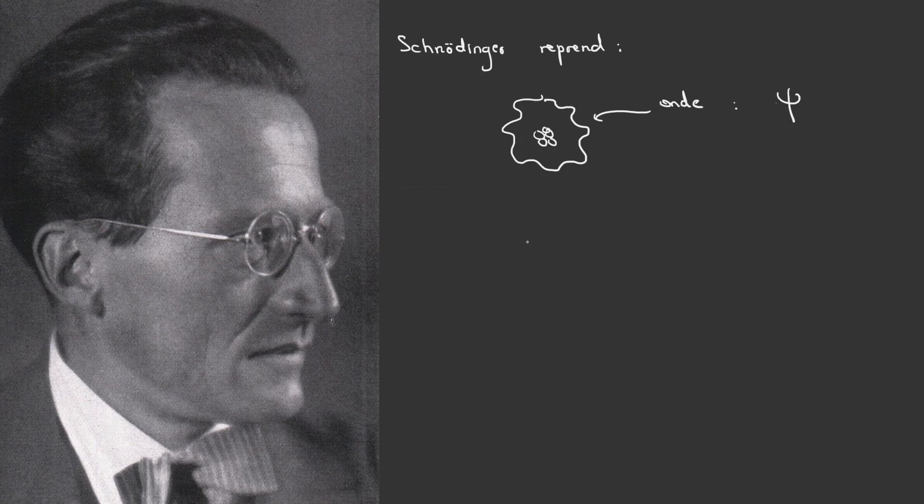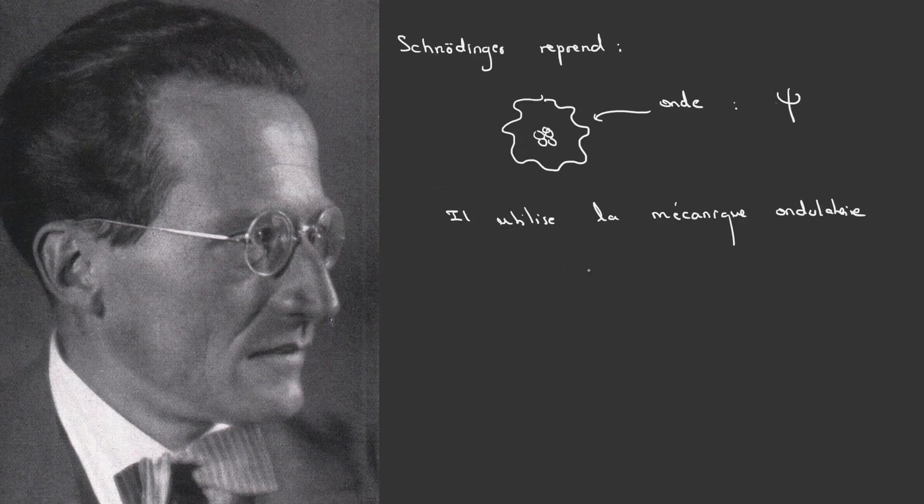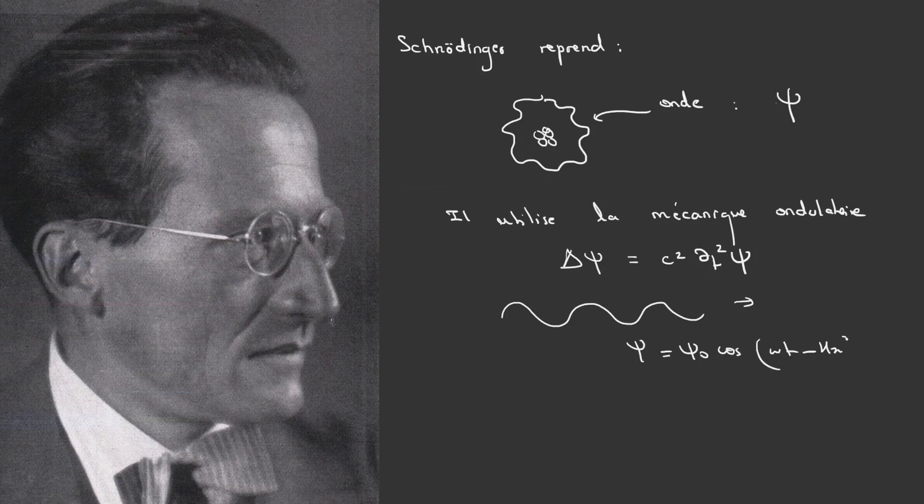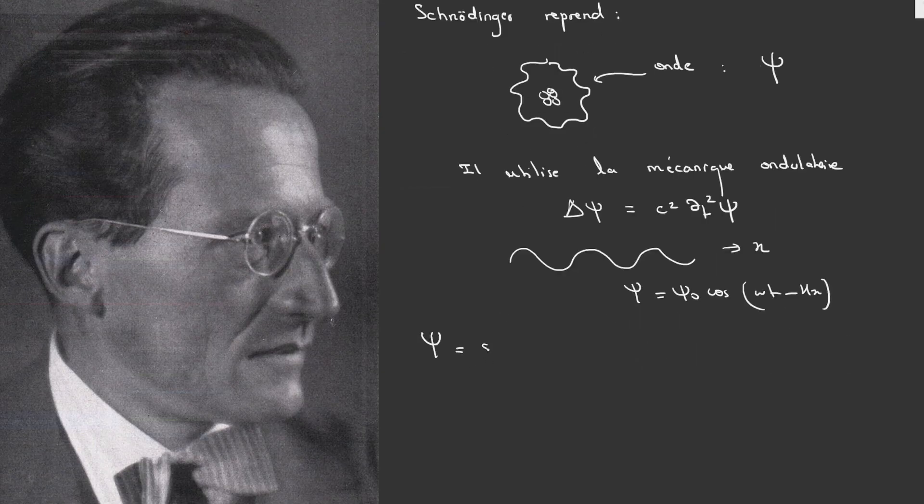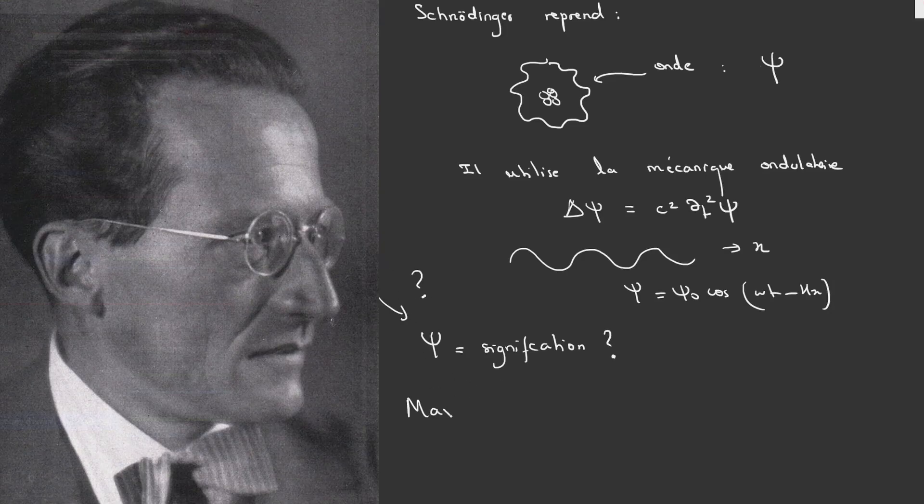Using the principles of wave mechanics, and the previous works of Fresnel, Jacobi and Laplace, Schrödinger established the Schrödinger equation, a fundamental differential equation that governs the evolution of this wave function. It is important to note that Schrödinger at the time did not yet understand the probabilistic nature of the wave function. This point was later clarified by Max Born, who interpreted it as a probability density.